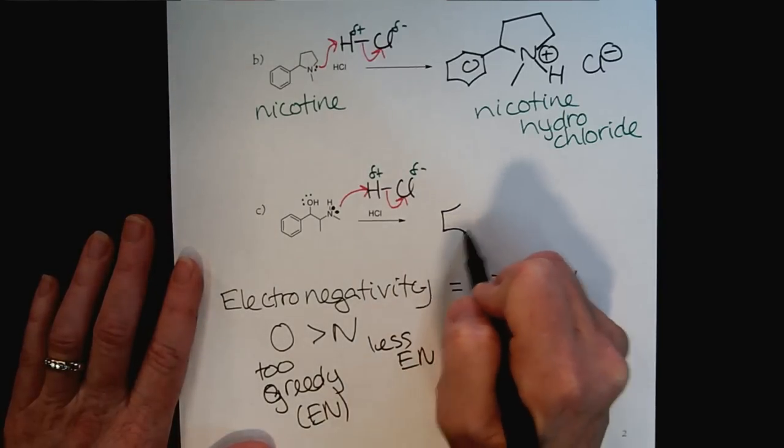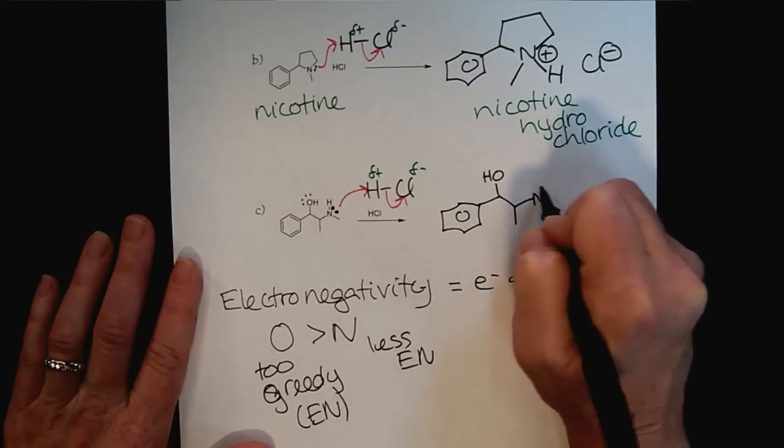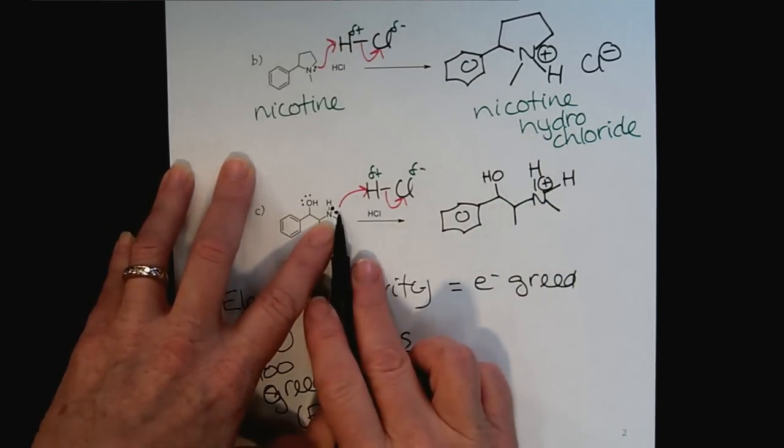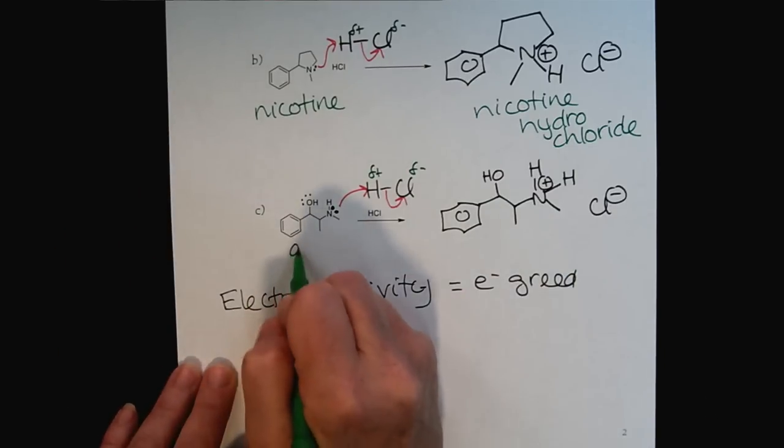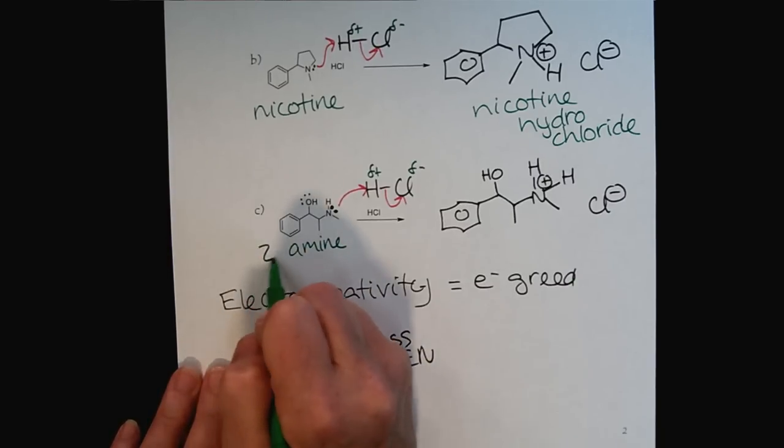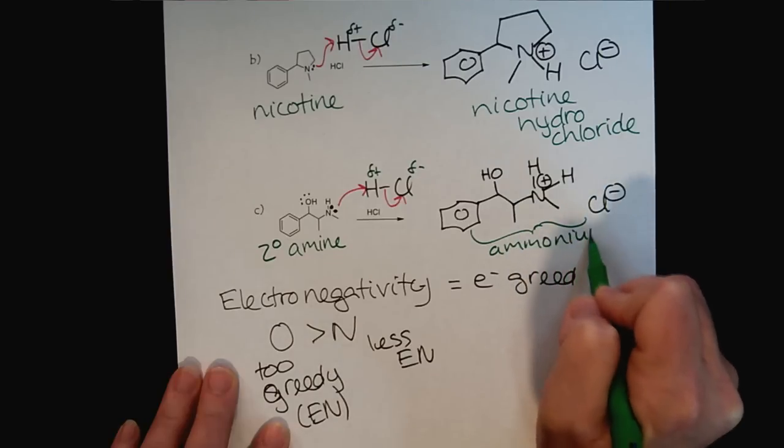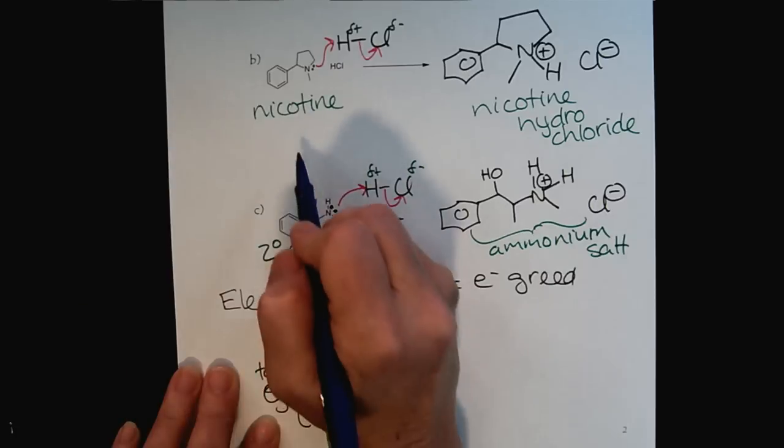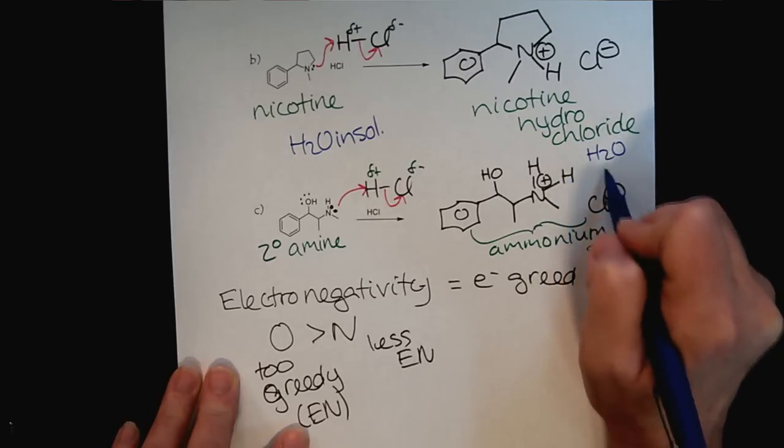Now we'll draw our ammonium salt like we have for the other examples. There was the original hydrogen, and now we would have the hydrogen that's connected through the reaction with the lone pair. We would have our amine. In this case, what kind of amine is this? Primary, secondary, or tertiary? This would be a secondary amine. This would be our ammonium salt. Recognizing that these would be water-insoluble, but once we've made the hydrochloride salt, they're now water-soluble.